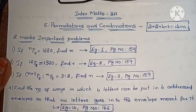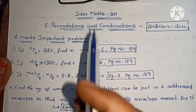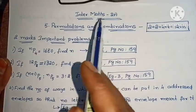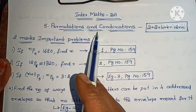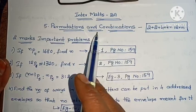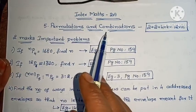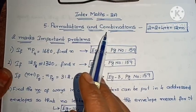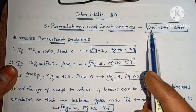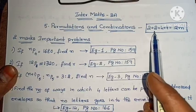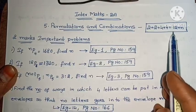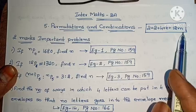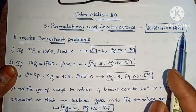Hello, welcome to Paranika Maths. Here is my maths class, 5th chapter: Permutations and Combinations. This chapter is important. It carries 2 marks and 4 marks questions, totaling 12 marks.